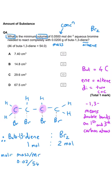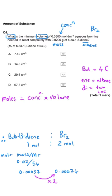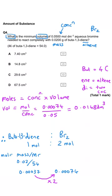We take 0.02 grams of buta-1,3-diene, divide by the MR of 54, and get 0.00037 moles. Since the ratio is 1:2, that means 0.00074 moles of bromine. Using volume equals moles divided by concentration gives 0.0148 dm³. Converting to cm³ by multiplying by 1000 gives 14.8 cm³, so B is the correct answer.